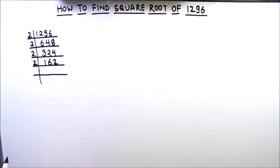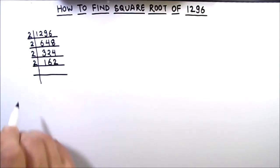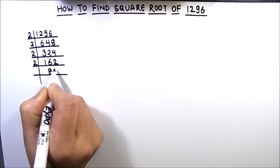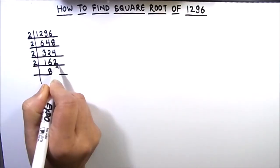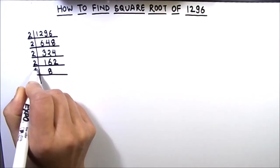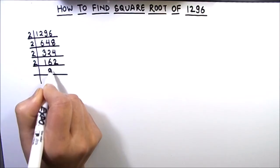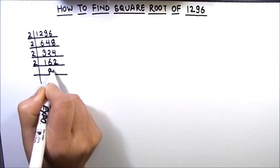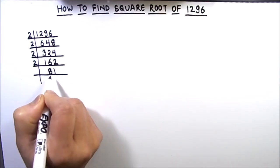Whenever the number is even, we are going to use 2 as the divisor. This is even, so we are going to use 2. 2 times 8 is 16 and 2 times 1 is 2.